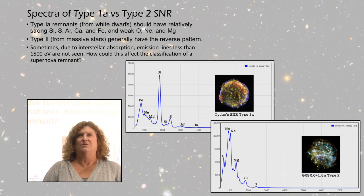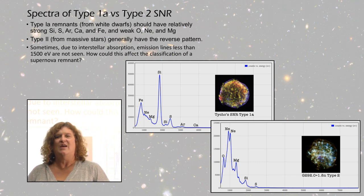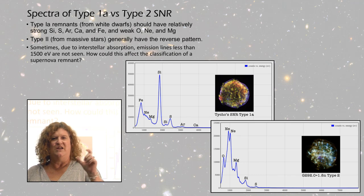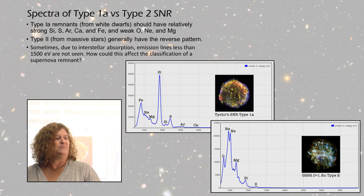So that students have a representative spectra of each type of supernova and the elements that would be found in each one. They can use those prototypes to then investigate other supernova remnants and determine if they are a Type 1a or a Type 2.